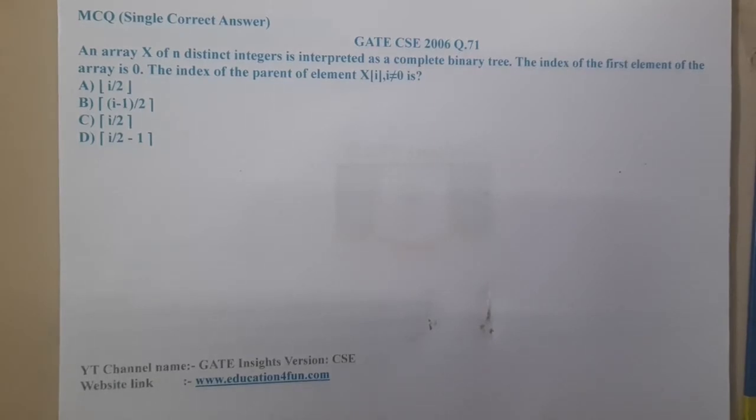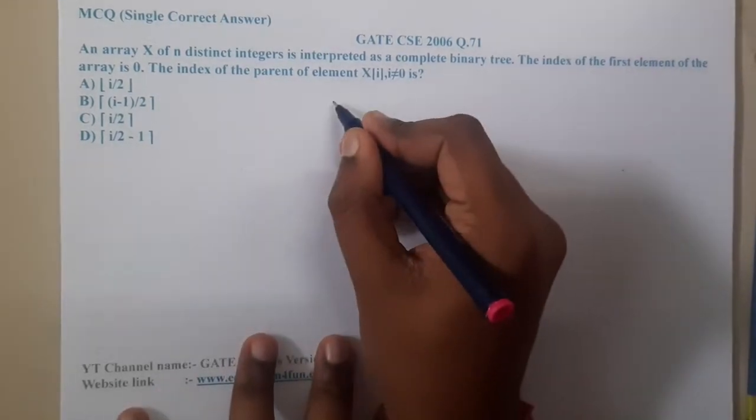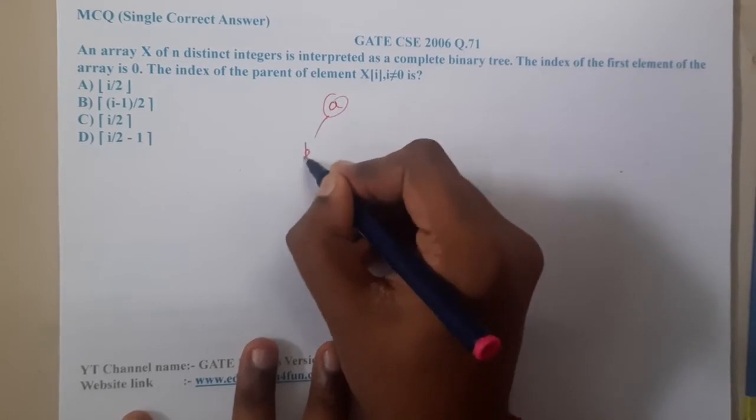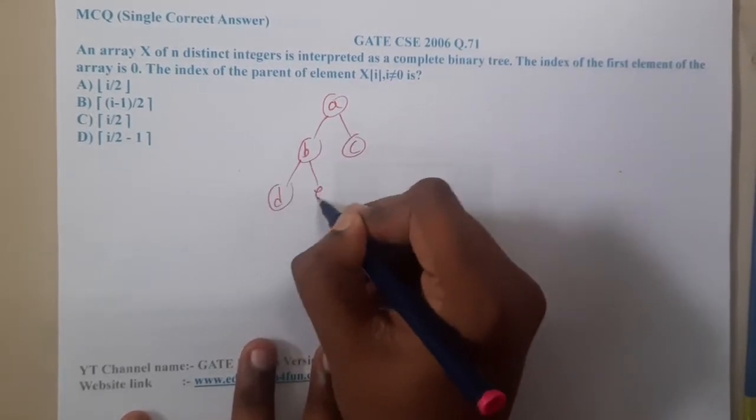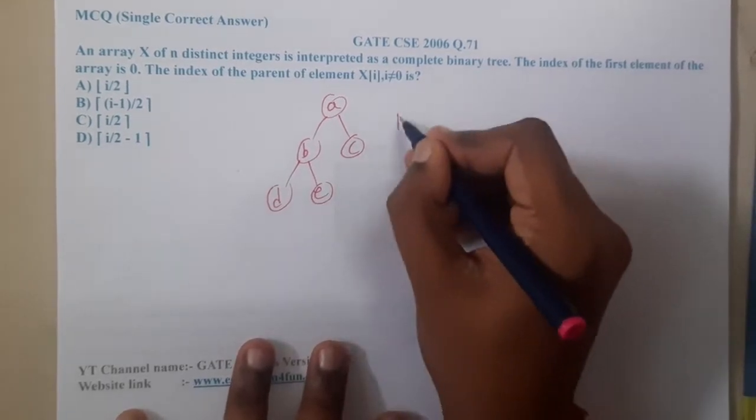This question seems to be really interesting. We normally know how a complete binary tree is stored. Let me draw a normal complete binary tree. So this is a complete binary tree.